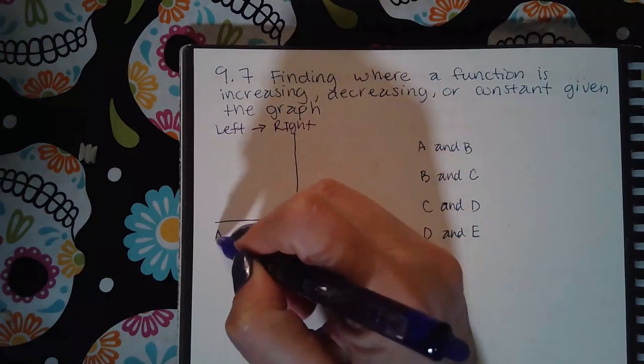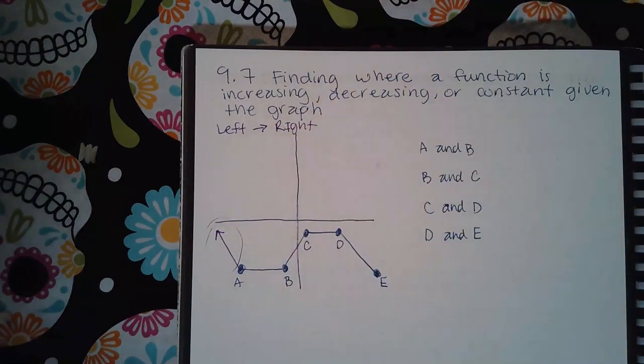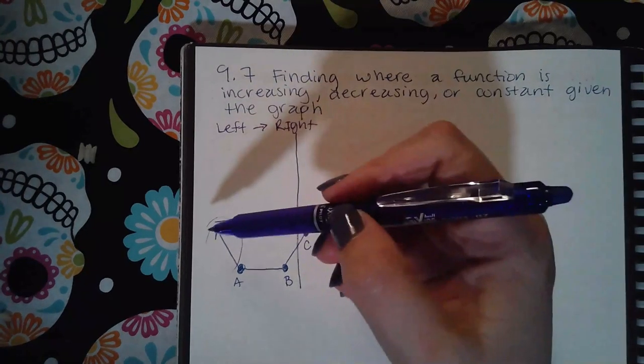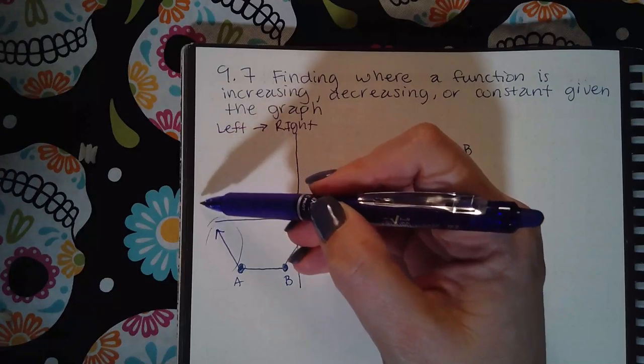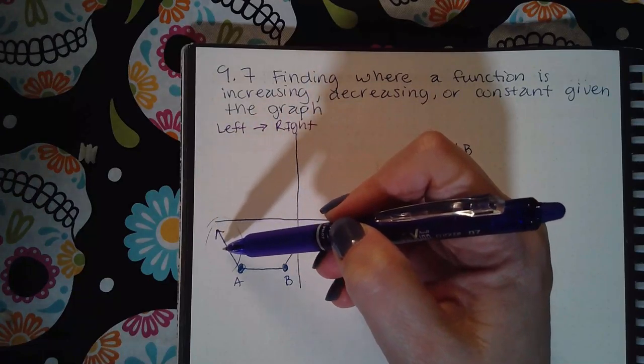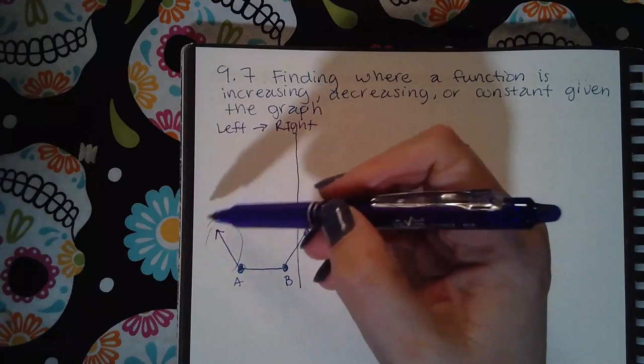Especially when they throw in an arrow like this, this section right here is not increasing even though it looks like it's going up. It's not increasing, it's decreasing, because if I go from left to right, I'm actually starting somewhere up in the infinity section, but then I'm going down, down, down, down, down. So that's actually decreasing.